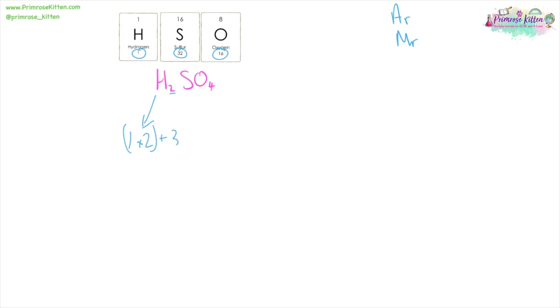So hydrogen has a mass of one and we have two of them. Sulfur has a mass of 32. Oxygen has a mass of 16 and we have four oxygens. So one times two is two, plus 32, plus 16 times four, which is 64. Add those together, we get 98.